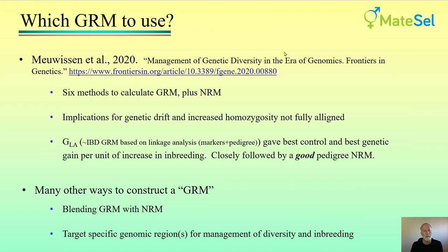I'll briefly consider which GRM to use — a decision you make outside of MateCell. This paper by Theo Meursen and colleagues, 'Management of Genetic Diversity in the Era of Genomics,' is very useful. It looks at six methods to calculate the GRM plus the NRM, and found that the implications for genetic drift and increased homozygosity do not fully align, so which GRM you use depends on your objectives. The best relationship matrix was GLA — an identity-by-descent GRM based on linkage analysis — giving the best control and the best genetic gain per unit of increase in inbreeding.